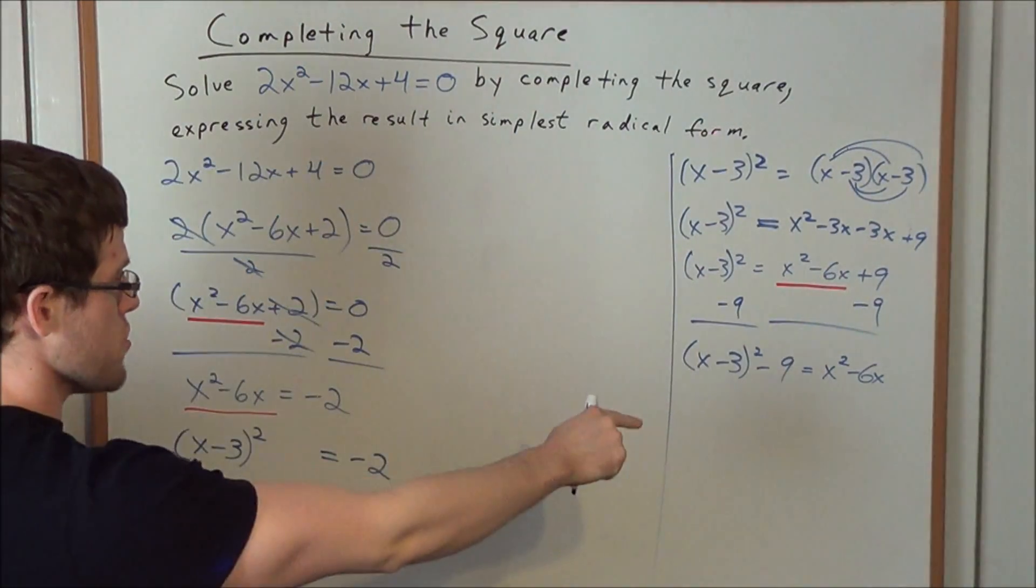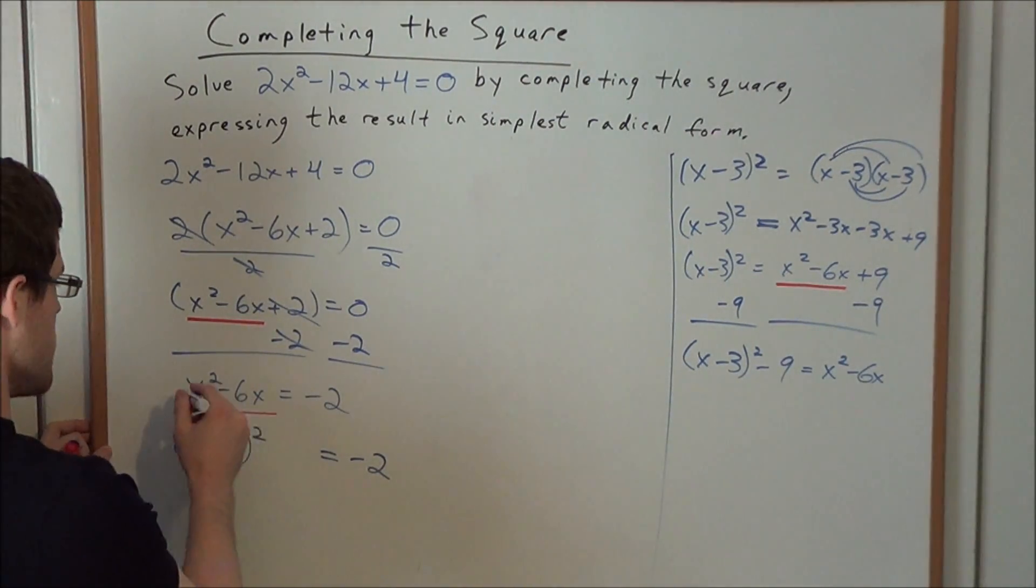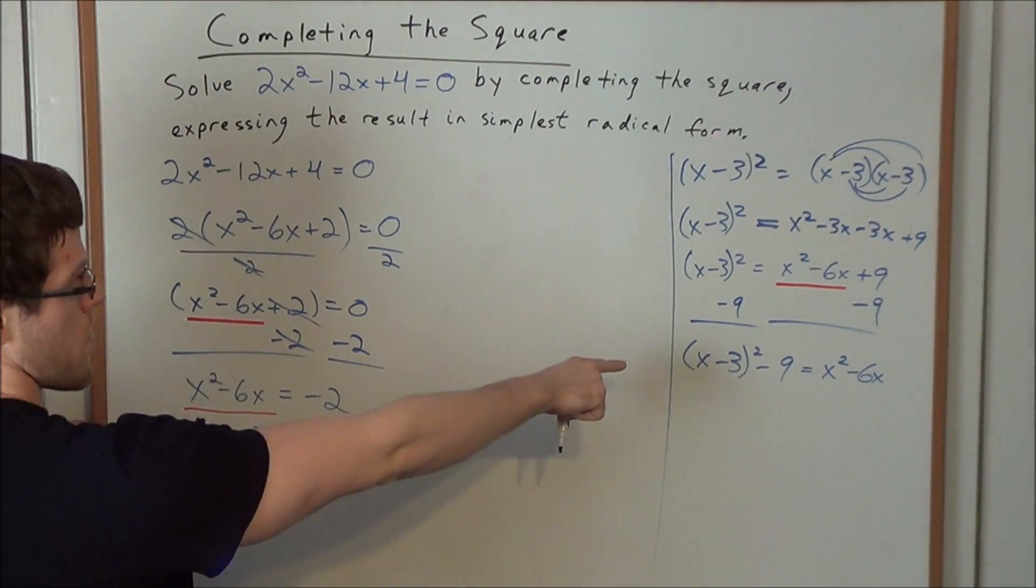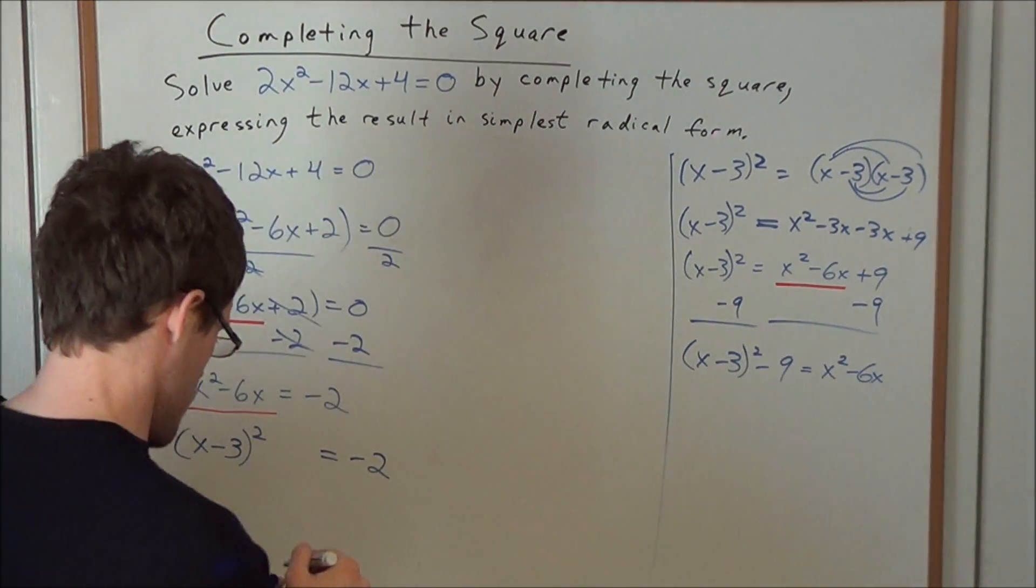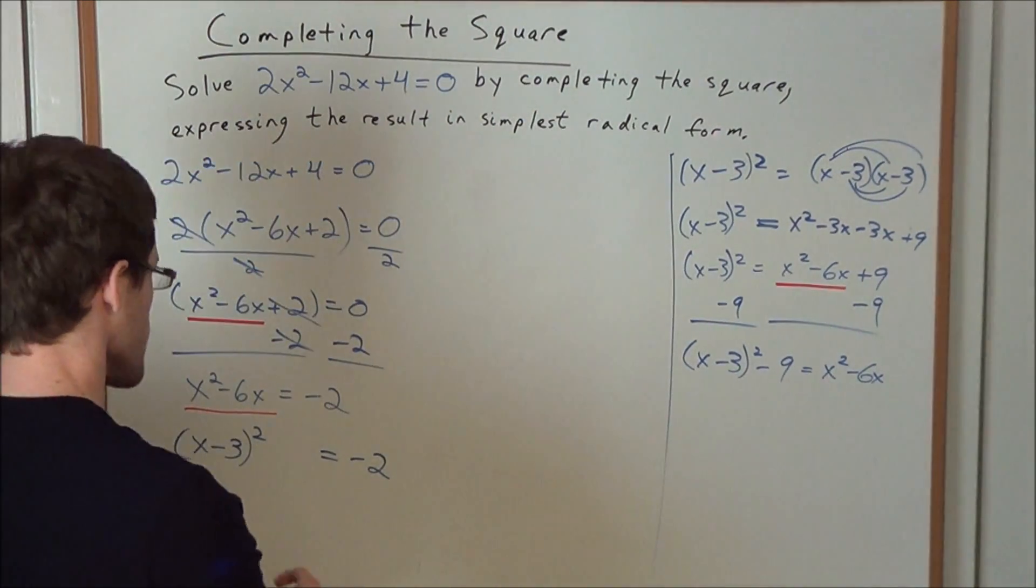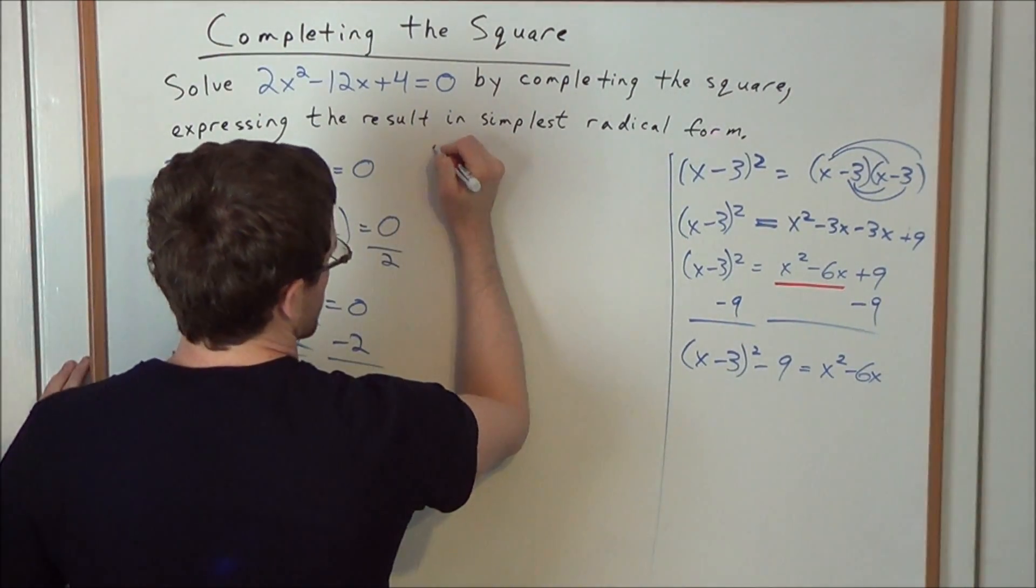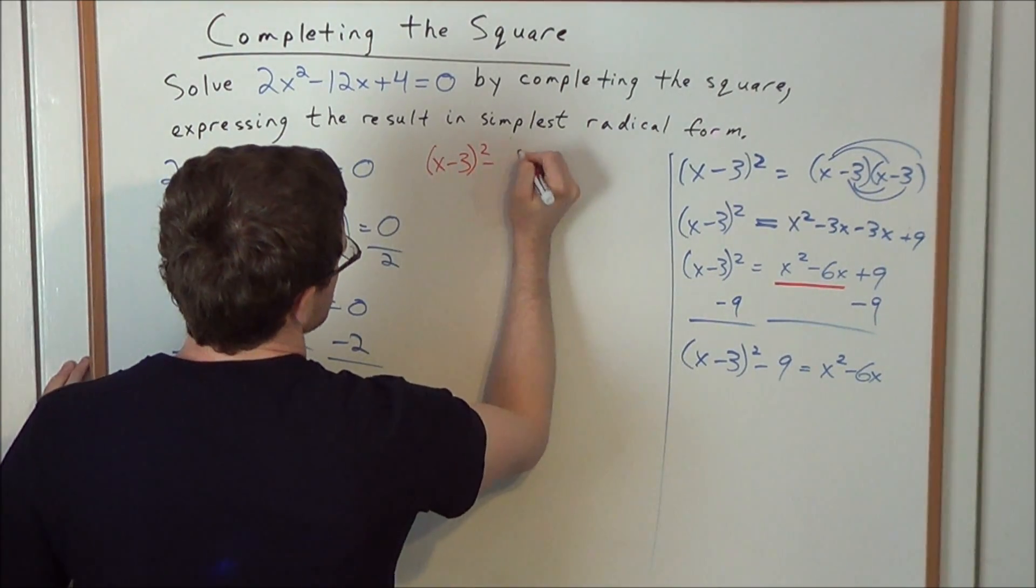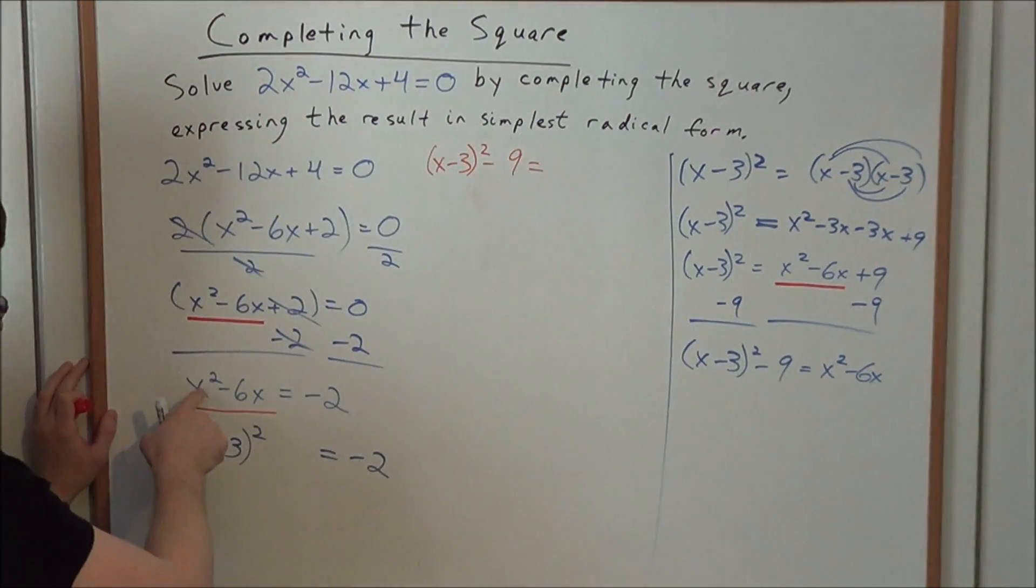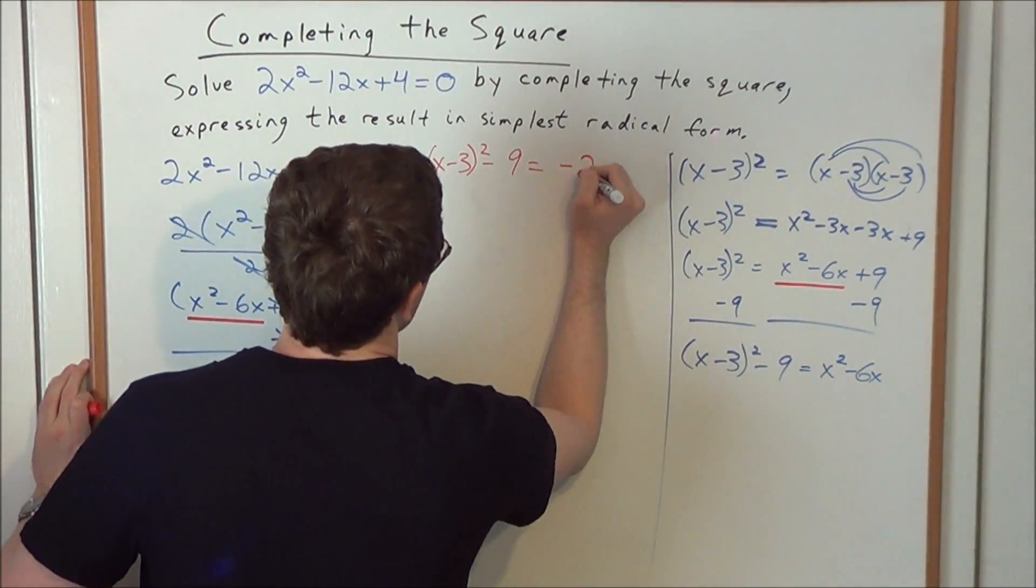So now what this allows us to do is we could substitute for x² - 6x in this equation here with (x - 3)² - 9. So now let's go ahead and do that and we'll finish solving this problem. So now we have instead of x² - 6x, we're going to go ahead and write (x - 3)² - 9 =, and remember x² - 6x was equal to -2, so now -2.